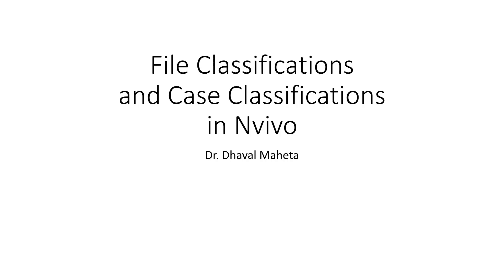Hello to all of you, this is Dr. Dawal Mehta and today we are going to discuss file classification and case classifications in NVivo. File classification allows you to capture general information about your files, for example interviewer, date and location. They are used for storing bibliographic information about your files. Case classifications, on the other side, are case-wise classifications. A case is considered as a person and it defines attributes for age and occupation.